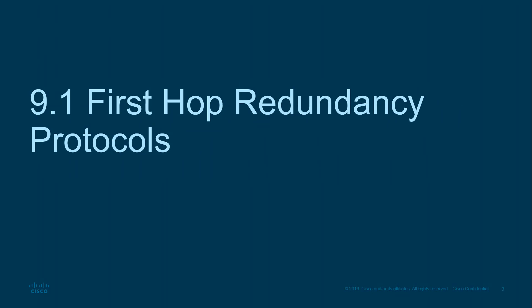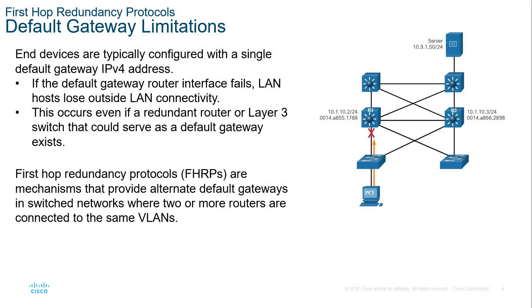What is a First Hop Redundancy Protocol? When we're leaving a LAN, we go from one Layer 3 boundary to another network by sending traffic to our default gateway. The issue is: what happens when our gateway goes down? If we only have a single gateway and it goes down, our network communication stops. FHRP provides a secondary or virtual gateway for router redundancy.